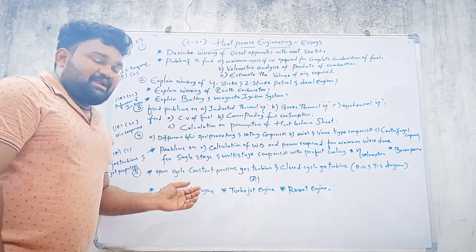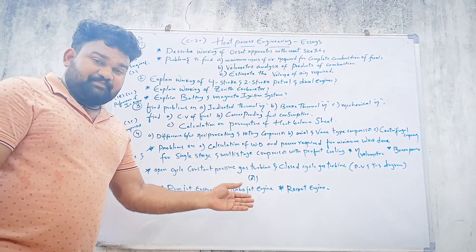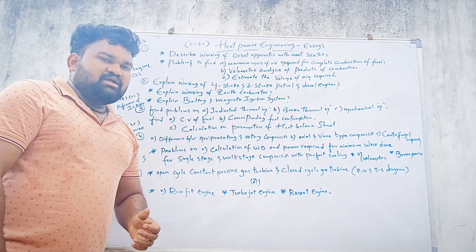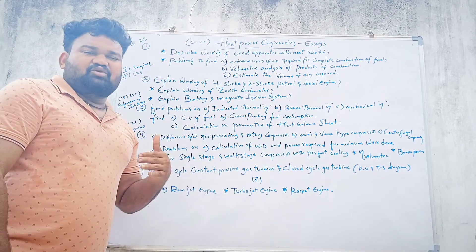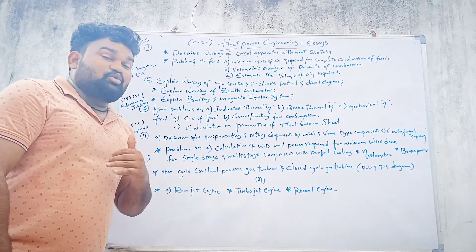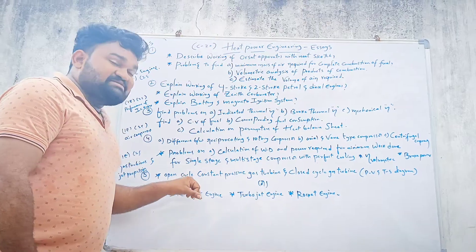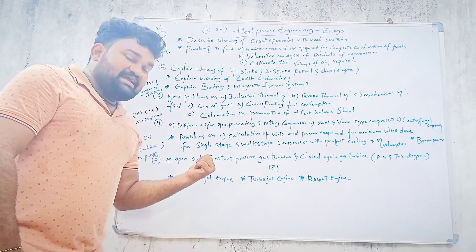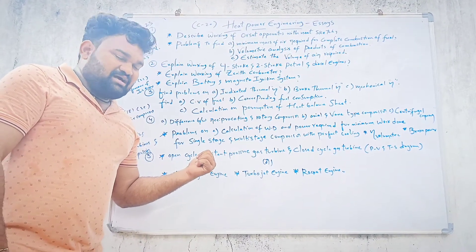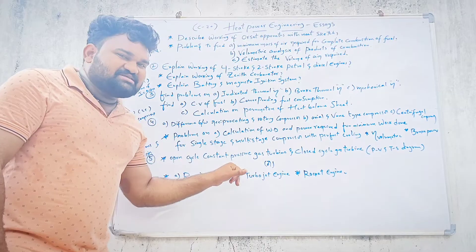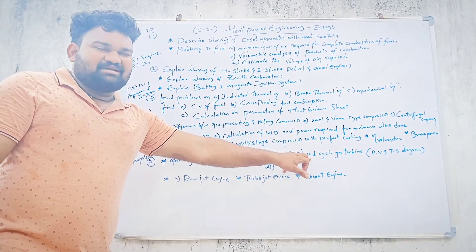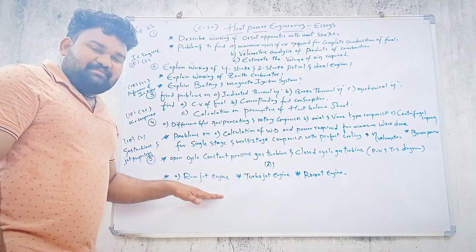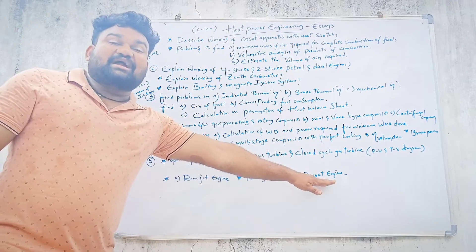You have to explain the open cycle constant pressure gas turbine and closed cycle gas turbine — these are repeated questions. There are 4 types of gas turbines, but the most repeated question is the open cycle constant pressure gas turbine. Also important: what is a Ram jet engine, what is a turbo jet engine, and what is a rocket engine.